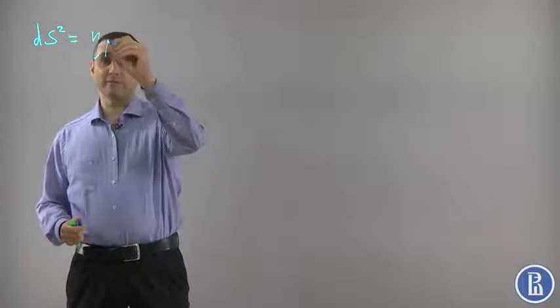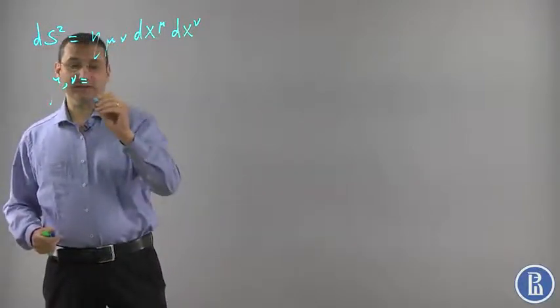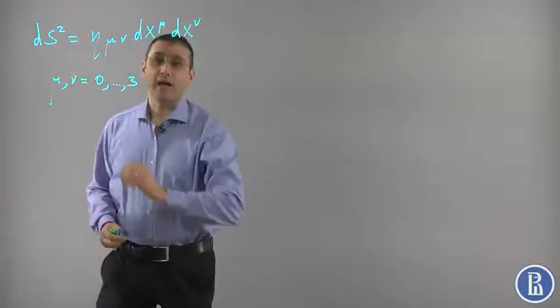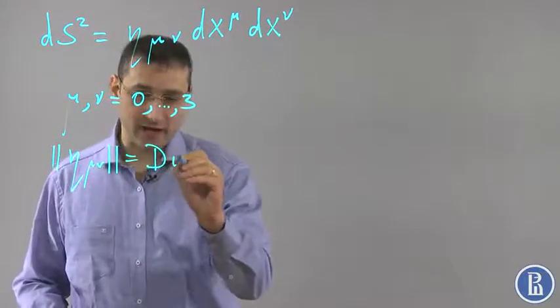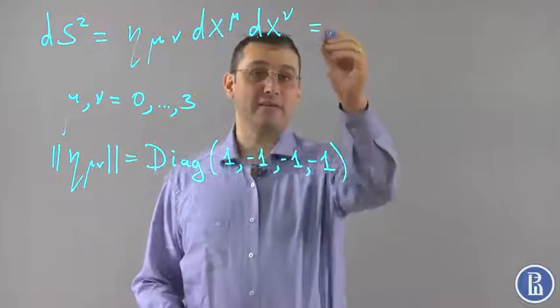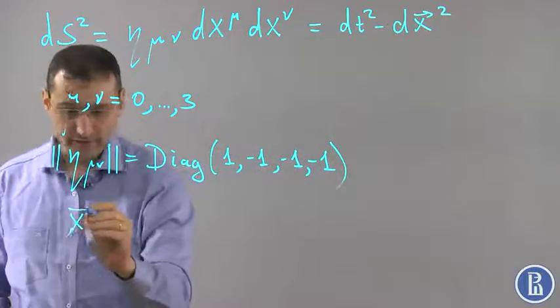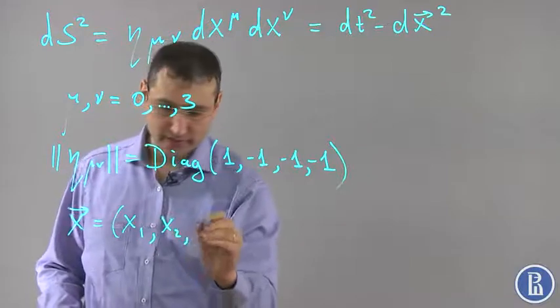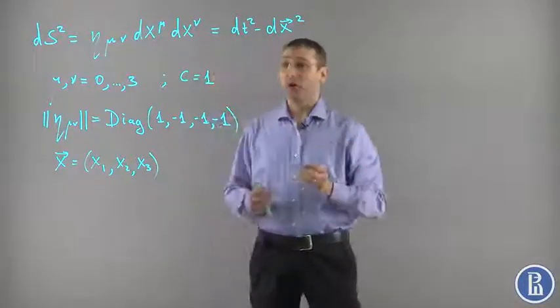Let me start with an easy discussion of Minkowski space-time and special theory of relativity. In special theory of relativity we deal with flat Minkowski space-time whose metric is famously given by eta_mu_nu, where mu and nu are indices ranging from 0 to 3. The metric tensor is diagonal, giving ds² = dt² − dx⃗², where x⃗ is (x1, x2, x3). Throughout these lectures I assume the speed of light equals 1.